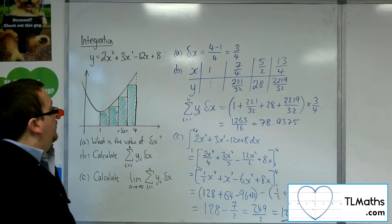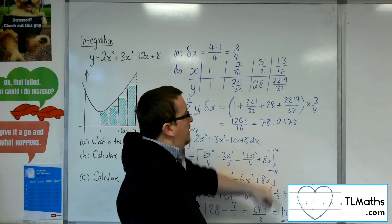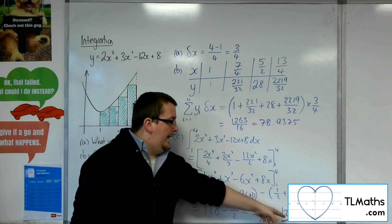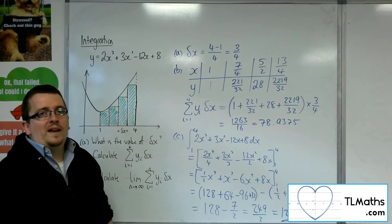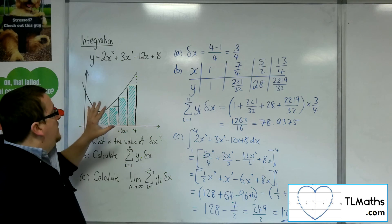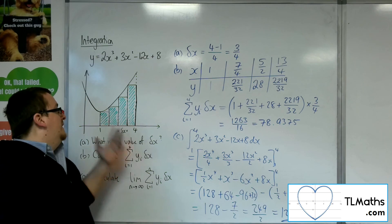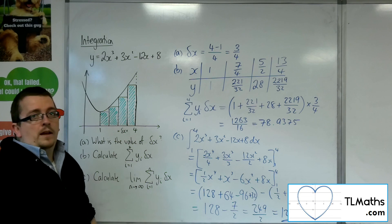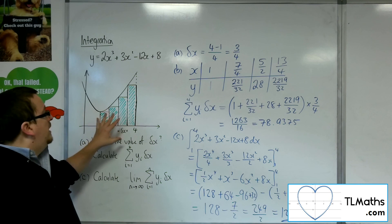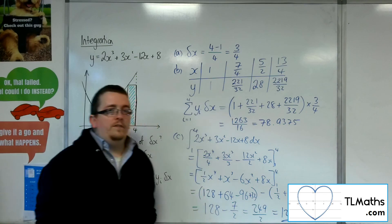So that is how we answer one of these questions. Clearly, what we got from our estimate — because we only used 4 bars — was a relatively weak estimate of the total area. We did get something that was less, which we would expect, because those bars are below the curve and so should always give you a lower figure than the exact result.